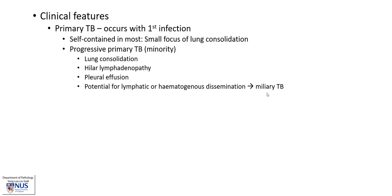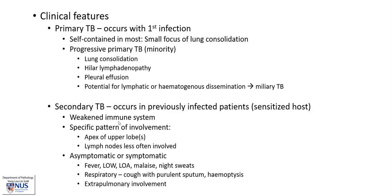This may give rise to miliary TB, where we see numerous minute foci, one to two millimeters in size, of granulomatous inflammation and infection. Secondary TB occurs in previously infected patients, and usually these patients will have a weakened immune system. There is a specific pattern of involvement where the apex of the upper lobes are usually involved, and the lymph nodes are less often involved because the disease is walled off earlier.